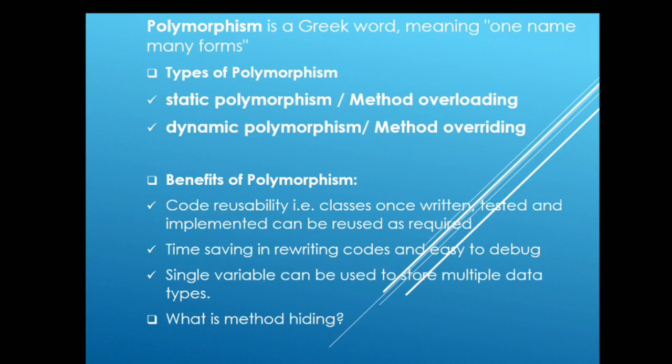Talking about the next pillar in object-oriented programming — that is polymorphism. Polymorphism is a Greek word whose meaning is one name and many forms, which gives you a provision in C-sharp to write a method with the same name that will function differently. There are two types of polymorphism: static polymorphism, also known as method overloading, and dynamic polymorphism, also known as method overriding.